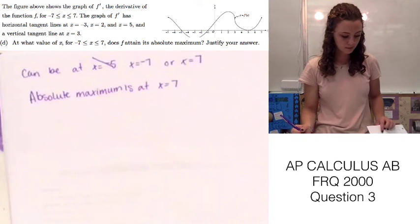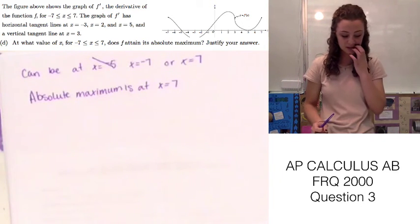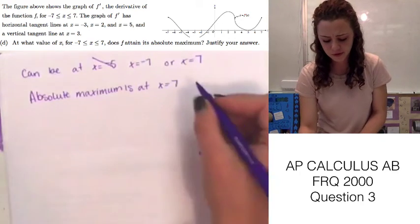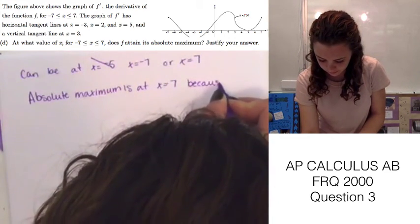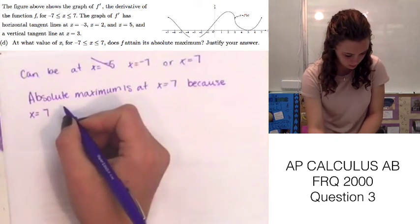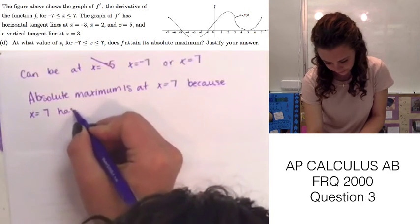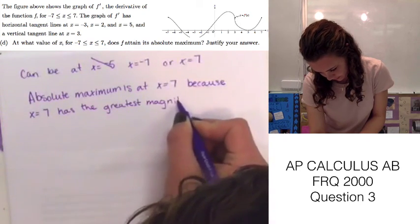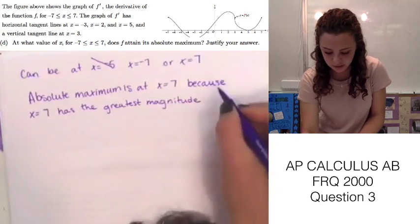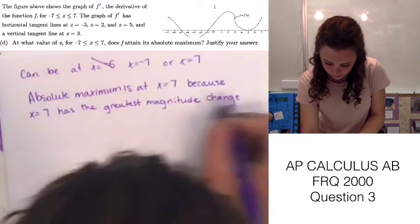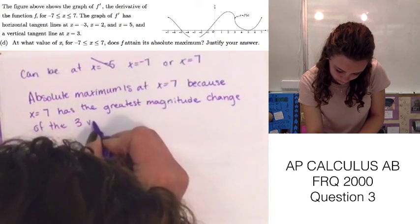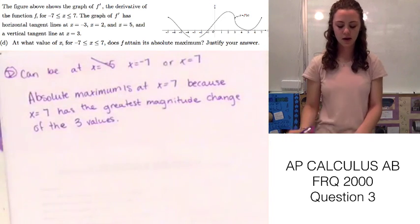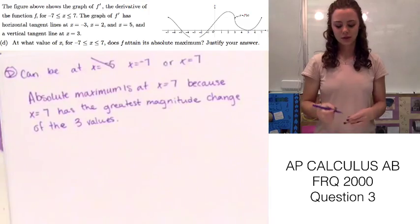The absolute maximum is at x equals 7, because at x equals 7 that has the greatest magnitude of change among the three candidate values. This is how you solve Part D of the 2000 AP Calculus Test, question number 3.